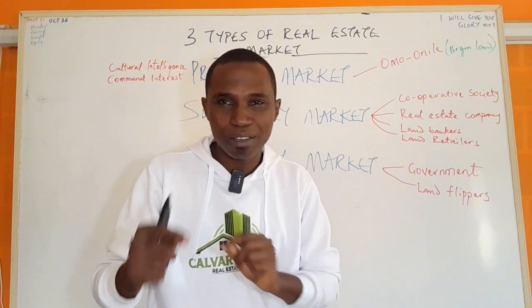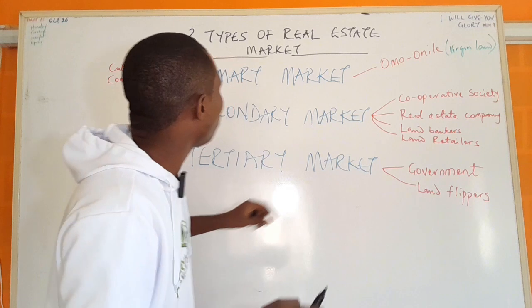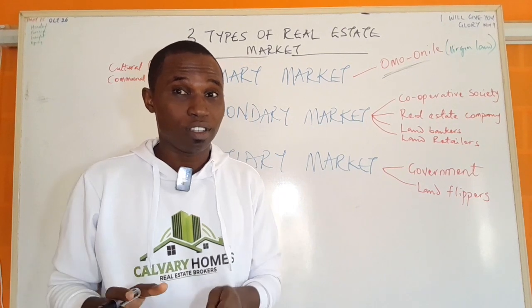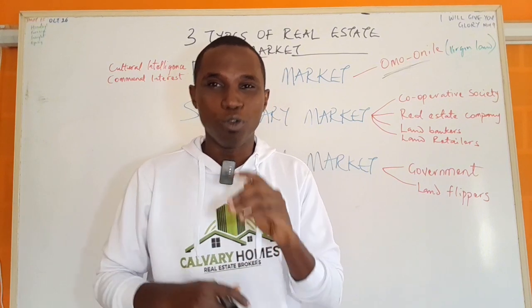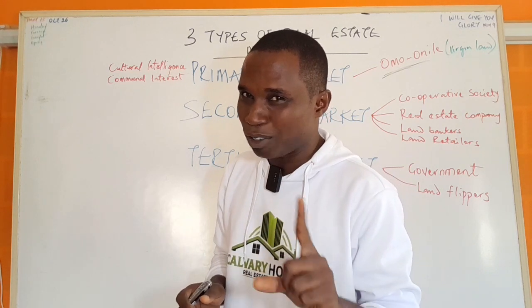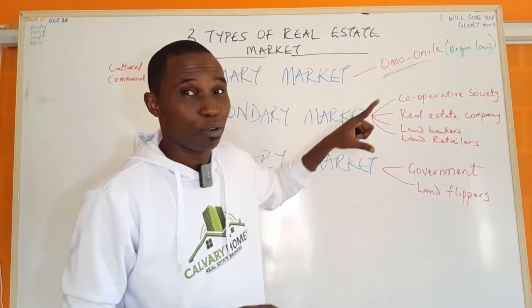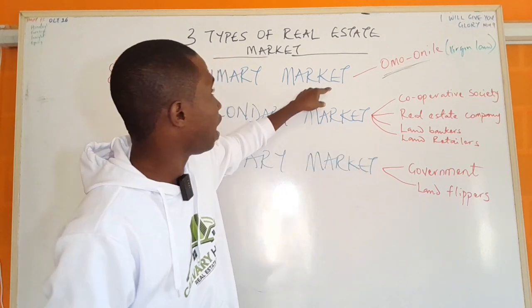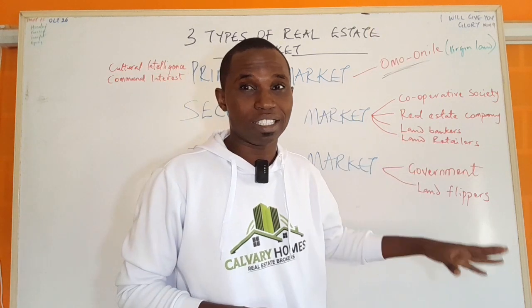Land bankers usually buy from the primary markets, but at times they also buy from the secondary market because they want to play safe — they don't want to deal with omonile, because the truth is omonile can actually be troublesome and chaotic at times. When you know how, just as I said, you need cultural intelligence and your property lawyer — don't do it alone. So land bankers sometimes prefer to buy directly from a real estate company, knowing they are dealing with someone who already handled the omonile.